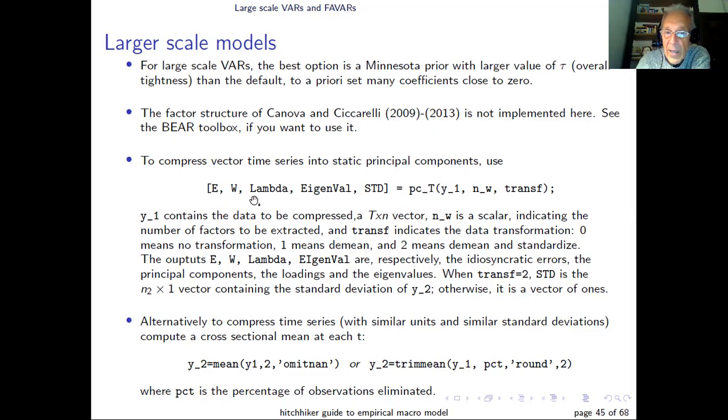The outputs are basically the error, the principal components, the eigenvalues, and the standard deviations of these functions. In case instead of using principal components you have a very large number of cross-sections, you can simply compute the mean of the data set, or you can use a trimmed version of the mean and trim away the value that you specify here in the second input for percentage.